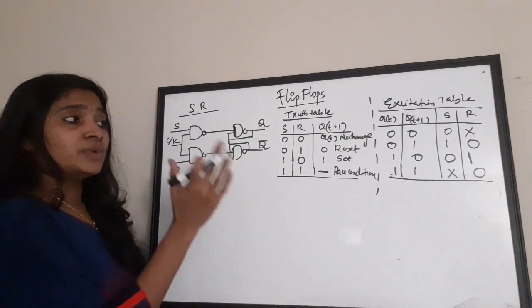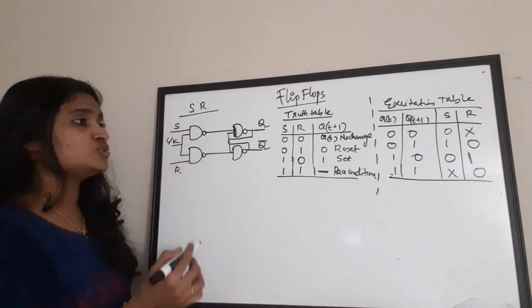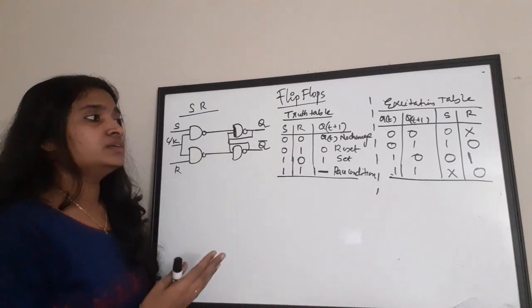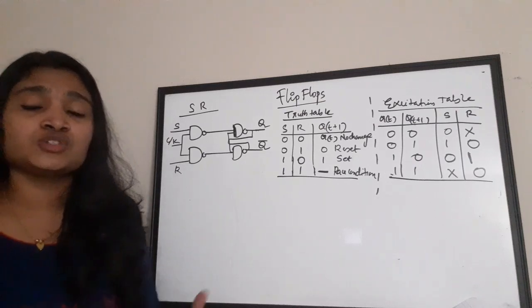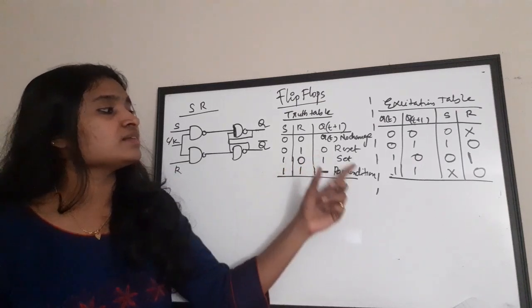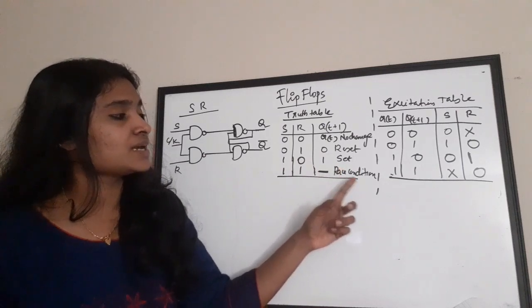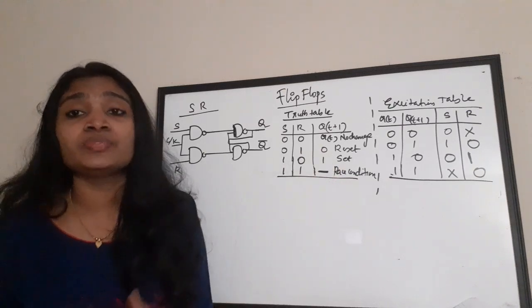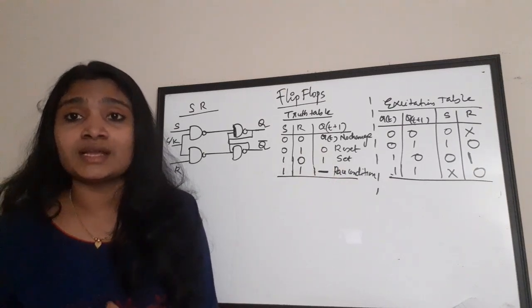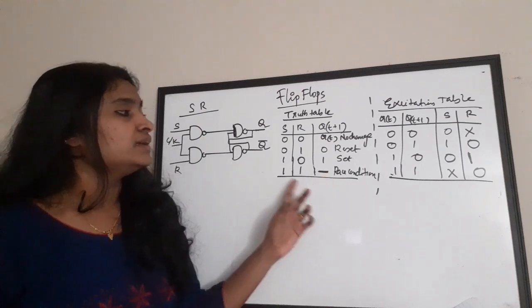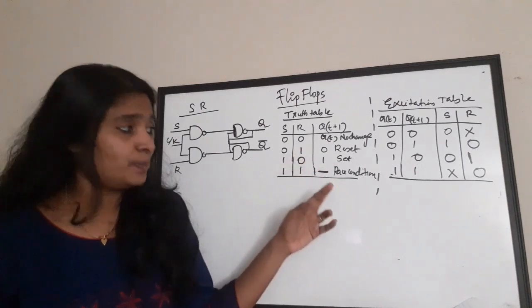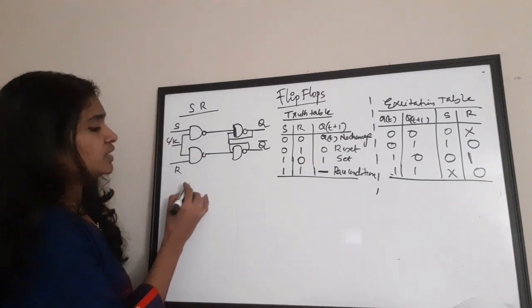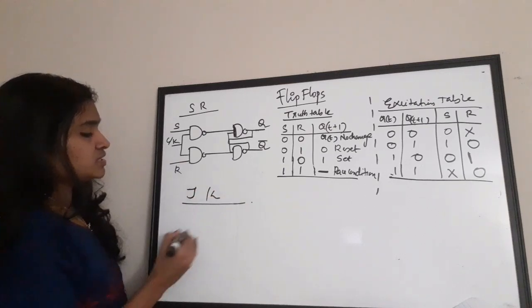Now let us see the JK flip-flop. An important thing to know is that the JK flip-flop is actually designed to avoid the race condition, which is a demerit of the SR flip-flop. In the truth table of JK, there is no race-around condition, and the race condition is replaced with a toggle state.